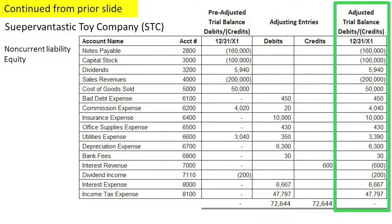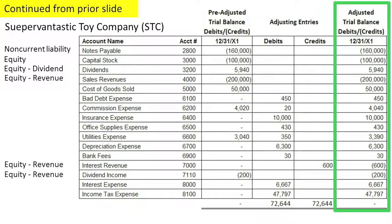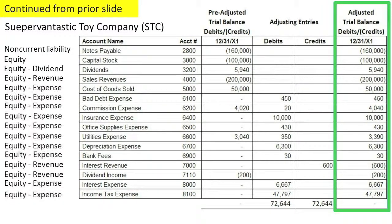Equity: capital stock will appear on the balance sheet. It is a permanent account which carries its balance forward from period to period. Dividends is an equity account, but it is only a temporary equity account that gets deducted from retained earnings. Revenues are equity accounts, but they are used to compute net income, which is closed into retained earnings. Expenses are deducted from revenues to arrive at net income, which is also closed into retained earnings.